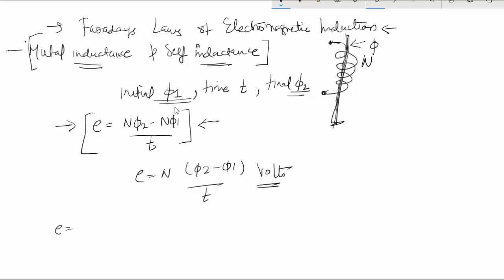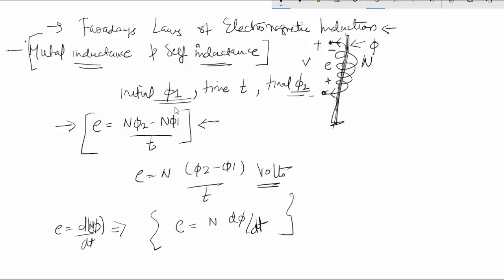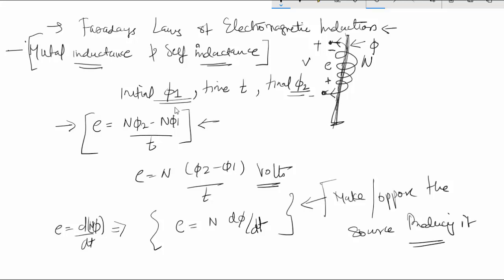This EMF is equal to the rate of change of flux linkage, given by E = N dφ/dt. This induced EMF will be in such a direction that if a supply voltage V is applied, the induced EMF E will always be opposite to the supply voltage — it will oppose the source producing it. This is known as Faraday's law of electromagnetic induction.